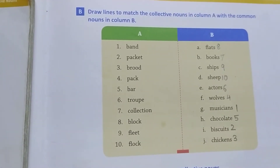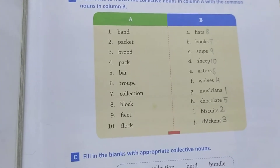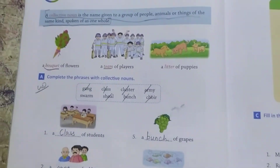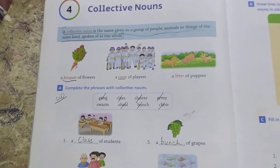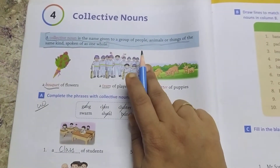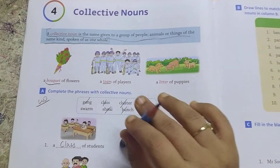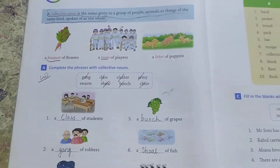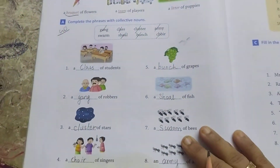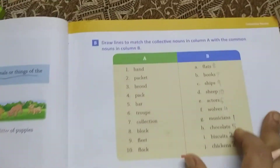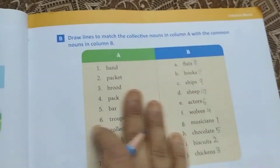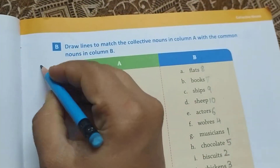Hi, grade 4th. In previous class of English grammar, I completed and explained you the meaning of collective nouns and also completed exercise A in the textbook. Now, I am starting with exercise B.